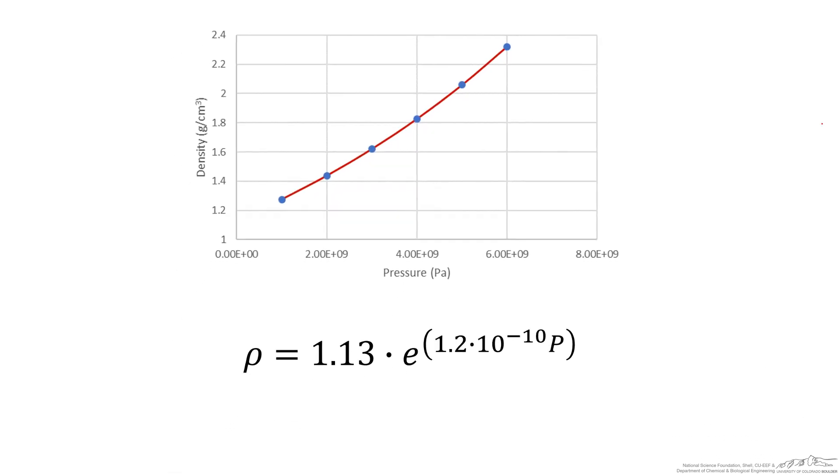The scientist comes up with ρ = 1.13 × e^(1.2×10^-10 P), where pressure is in Pascals and density is in grams per cubic centimeter. The user creates this using the units they choose - they measure pressure in Pascals and density in grams per cubic centimeter.